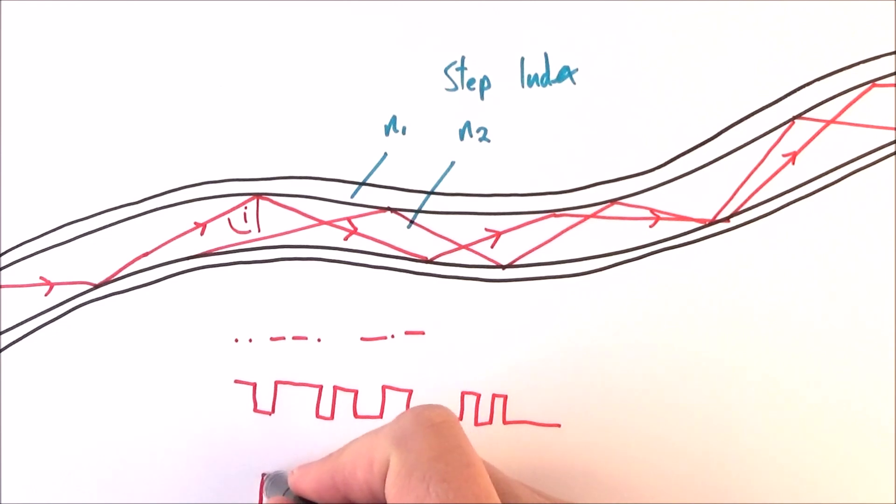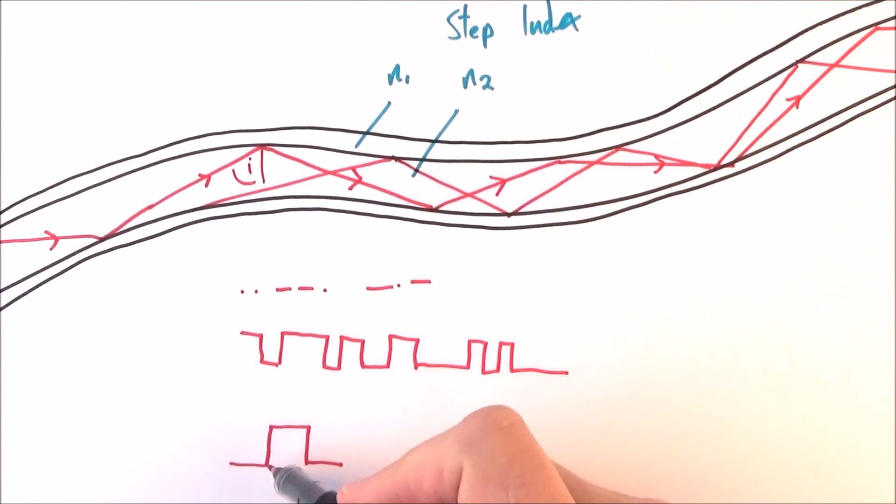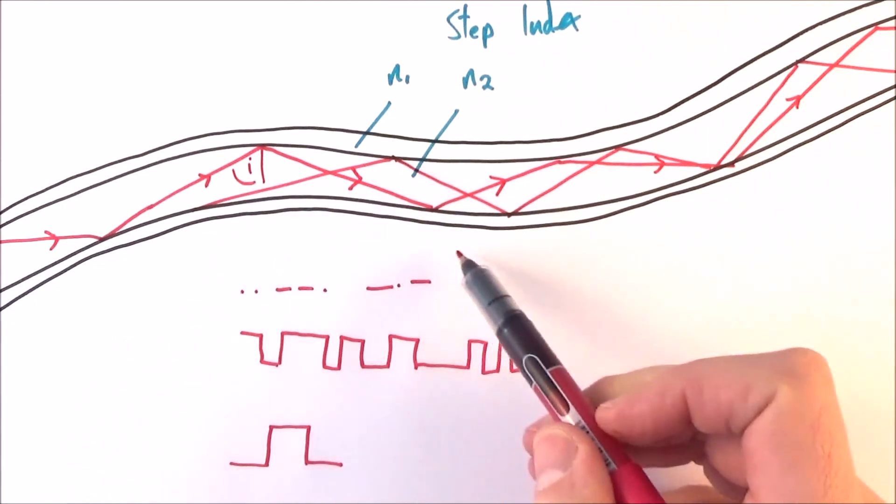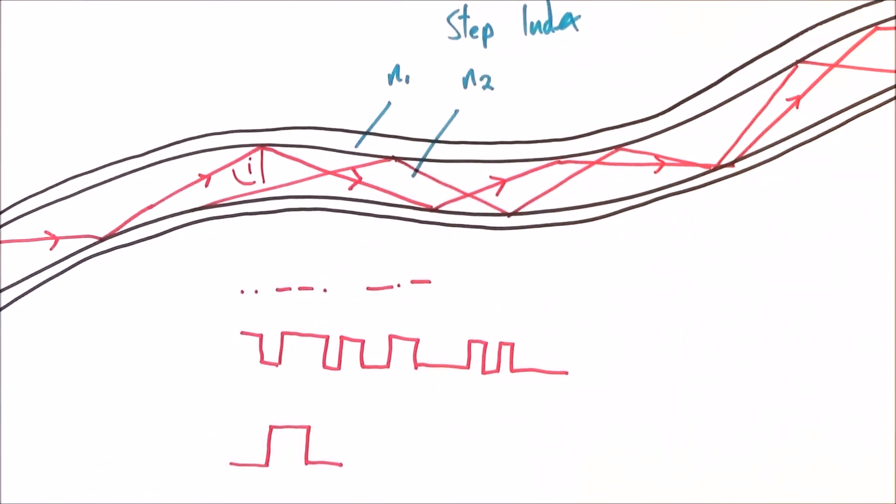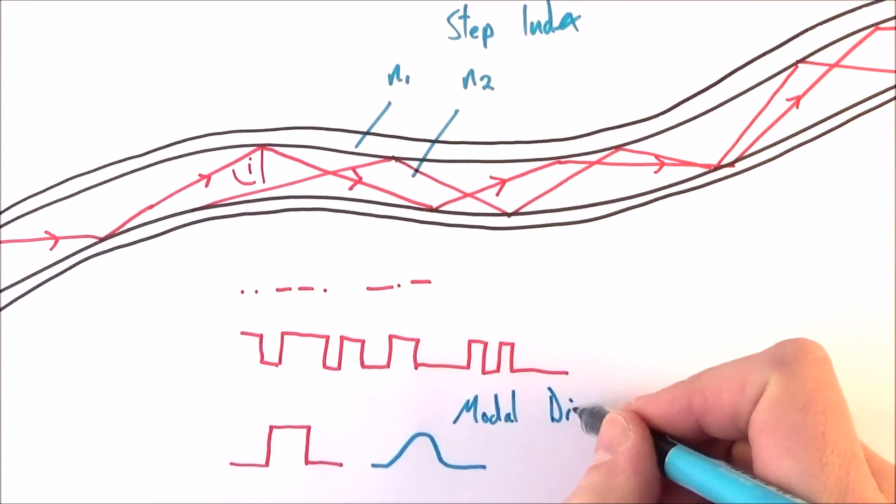Now the problem is with having what we call this modal dispersion is that we might start with a signal which is very clearly off or on and when that light goes along some of the light takes a longer path and what we end up getting is rather than a sharp signal we get something that looks a bit like that and that's what we call the modal dispersion.